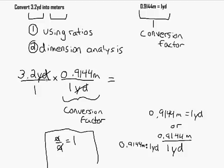And so all I have to do is multiply these across. I go 3.2 multiplied by 0.9144. Because I'm multiplying fractions, I multiply the numerator and I multiply the denominator. I'm going to multiply the numerators across here.